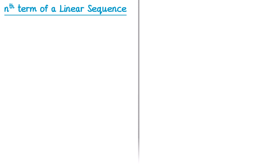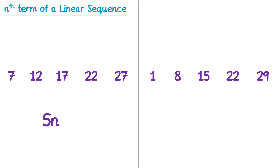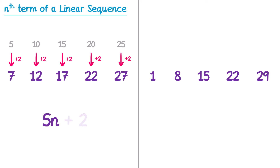Here are two more sequences to try. For the first sequence, the difference is always adding 5, which means it's a 5n sequence. We write the 5 times table above: 5, 10, 15, 20, 25. To get from 5 to 7, we add 2, and this works from 10 to 12 and for all terms. So this one is 5n plus 2.